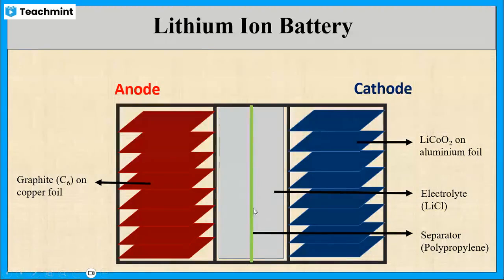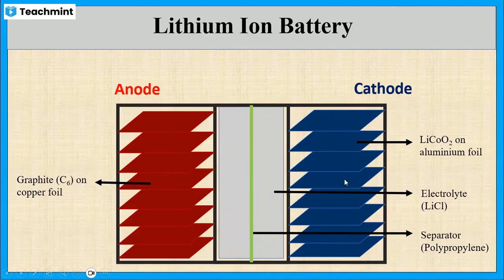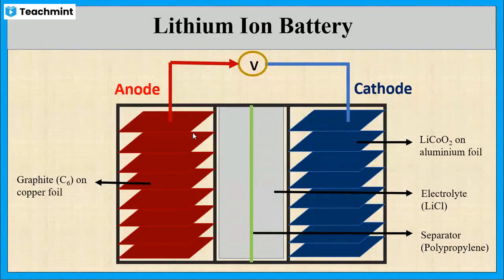This separator separates the cathode and anode and allows the movement of lithium ions from anode to cathode and cathode to anode. Finally, these two electrodes are connected through a voltmeter. This is the construction of lithium-ion battery.